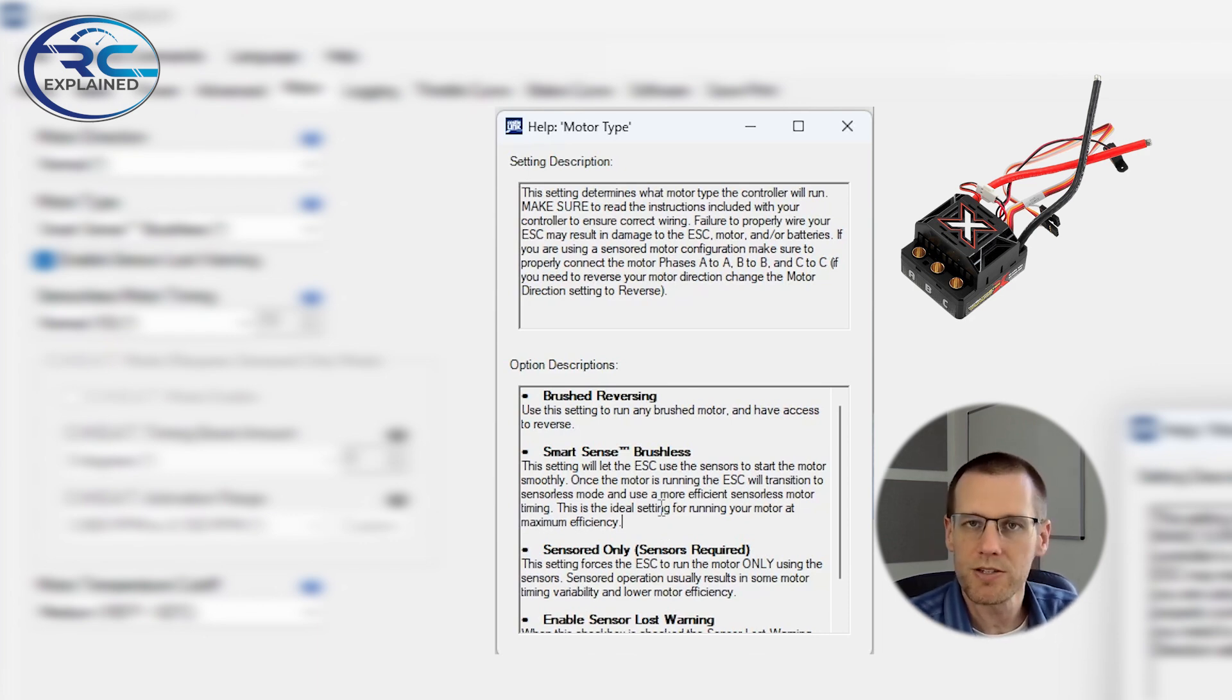We want the smart sense brushless mode here on our Castle Creations electronic speed control to operate and use the sensorless type mode to gain maximum efficiency, maximum amount of power. We don't want to have a lot of consumption from our brushless motors. And we certainly don't want our brushless system in general, motor, battery and speed control to get hot, essentially burning power for no apparent reason. This is why we need to select the smart sense brushless operation.